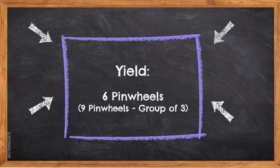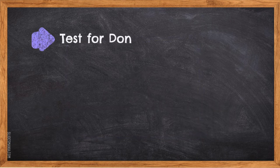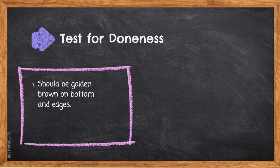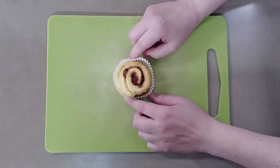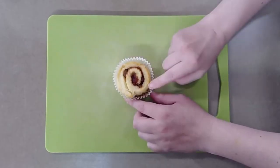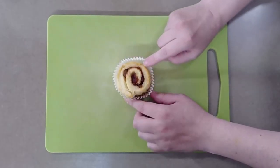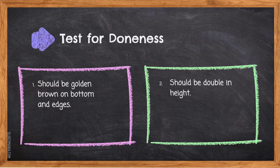The yield for this recipe is six pinwheels, or nine pinwheels for a group of three. Test for doneness: the pinwheels should be golden brown on the bottom and edges, and should be double in height.